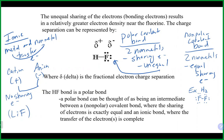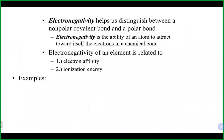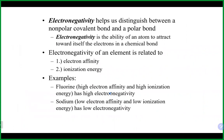How do we know if covalent electrons will be shared equally or unequally? We look at electronegativity — the ability of an atom to bring electrons toward itself. Electronegativity is based on ionization energy (the energy needed to remove an electron) and electron affinity (the energy change when an electron is gained). Fluorine has high electron affinity and high ionization energy, so it always wants to gain electrons. Sodium has low electron affinity and low ionization energy, so it easily loses electrons.